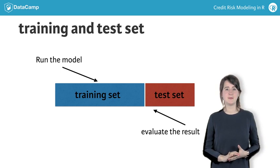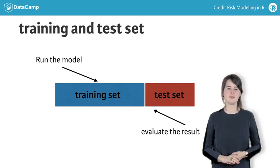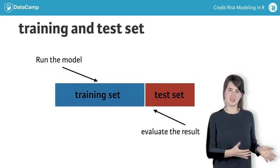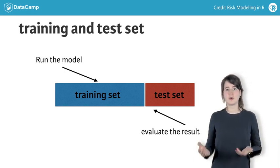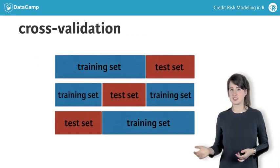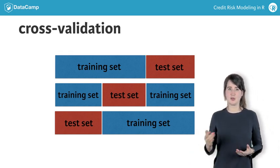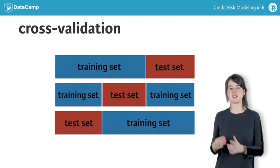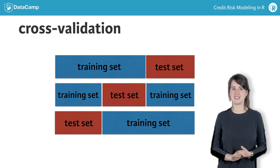One way to reduce this variation is by using cross-validation. For the two-thirds training set and one-third test set example, a cross-validation variant would look like this. The data would be split in three equal parts, and each time, two of these parts would act as a training set, and one part would act as a test set.